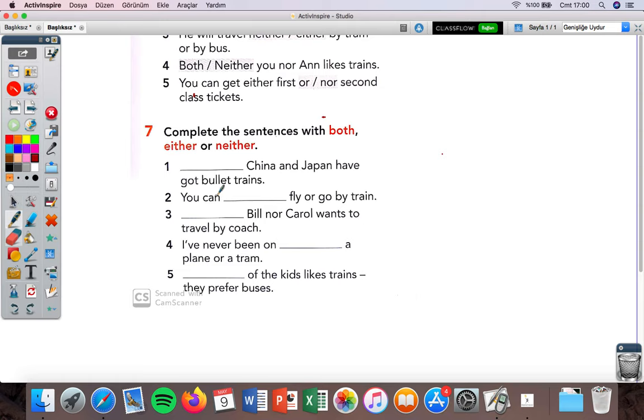China and Japan have got bullet trains. Did you see the 'and'? Which one is used with 'and'? Both. Both China and Japan have got bullet trains. Bullet trains are high speed trains, very high speed trains. You can fly or go by train. Did you see the 'or'? Which one is used with 'or'? Either. You can either fly or go by train. Nor - which one? Neither. Neither Bill nor Carol wants to travel by coach.